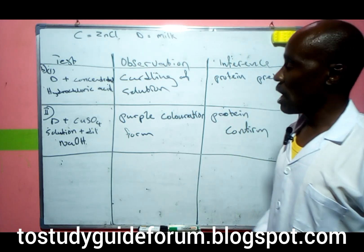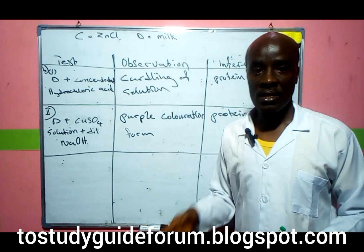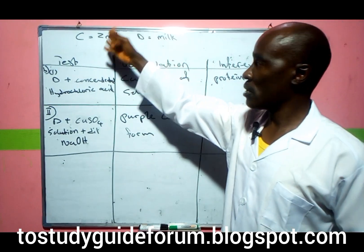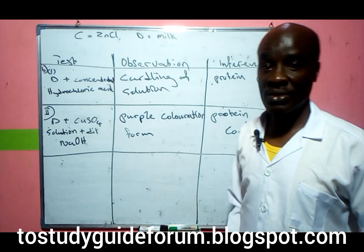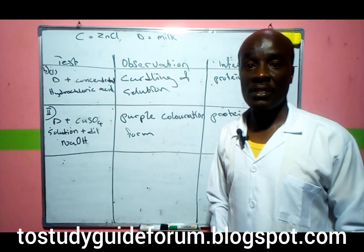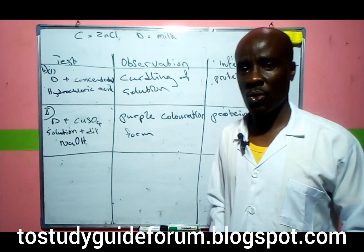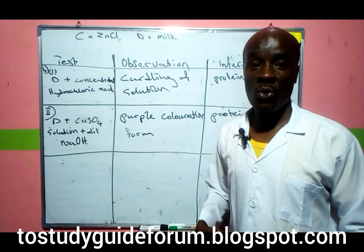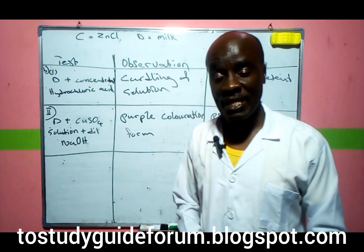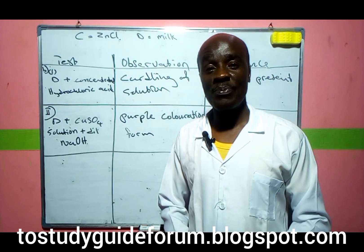One thing to note: if you look at the list of reagents given, there are no reagents likely to be used to test for chlorine, because chlorine is tested with silver nitrate and dilute nitric acid. Since those reagents aren't provided, it's possible there will be no test for chlorine. Thank you for being part of the class — please subscribe and share, and leave any questions in the comments.